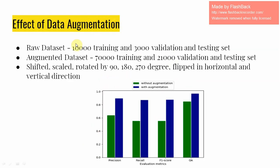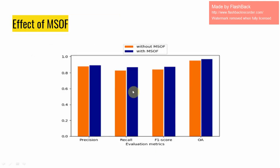The effect of data augmentation was also examined. Initially, the raw dataset contained about 10,000 training and 3,000 validation and testing samples. After augmentation — including shifting, scaling, rotation by 90, 180, and 270 degrees, and flipping in horizontal and vertical directions — the final dataset grew to around 70,000 training and 21,000 validation and testing samples. Almost every evaluation metric increased by a large percentage after augmentation, confirming augmentation as a crucial step. Additionally, the accuracy of change detection was further improved by usage of the MSOF strategy, with increases in all metrics, because feature maps from multiple semantic levels are combined to capture more detailed information.